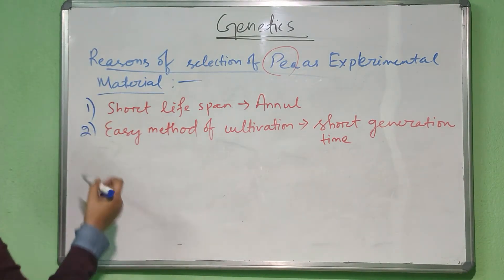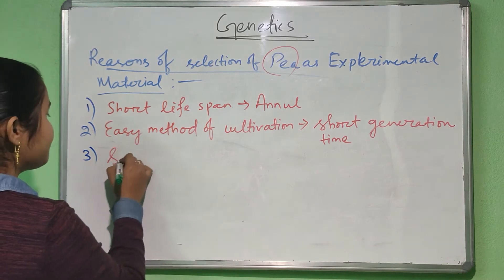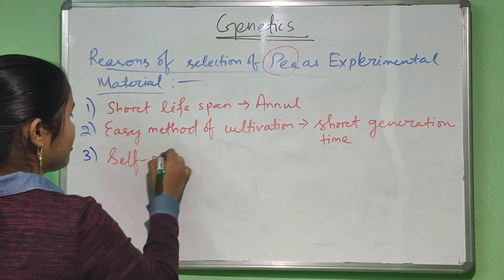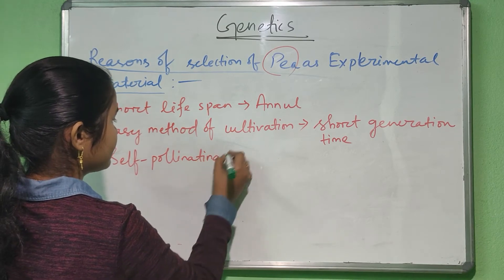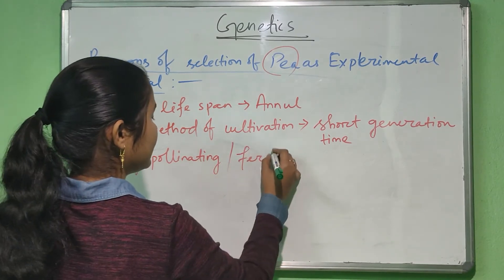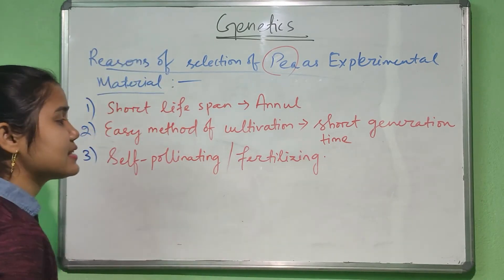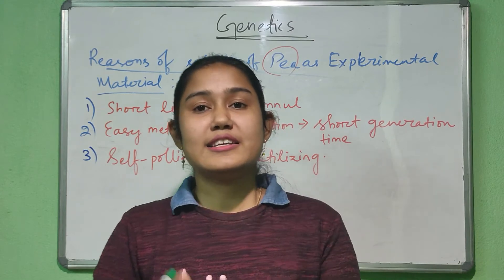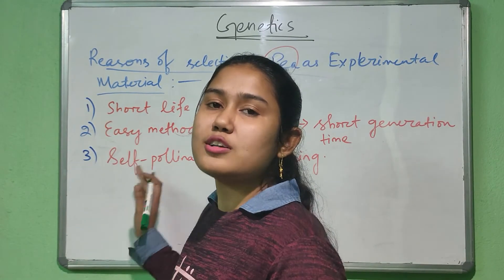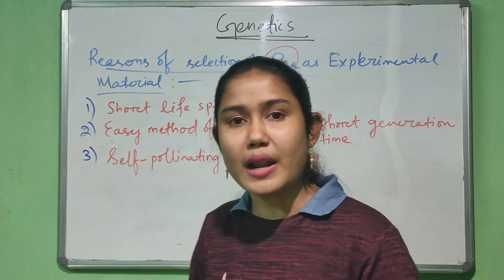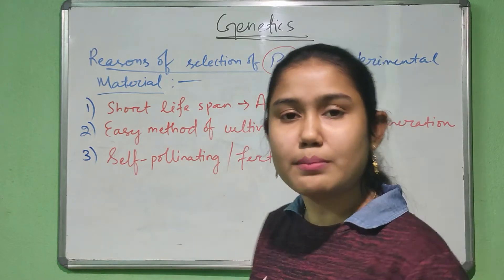The next point is that the pea plant is self-pollinating or self-fertilizing. As it is self-pollinating, he could easily perform self-pollination as well as cross-pollination in the plant. That's why he chose the pea plant.